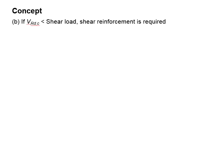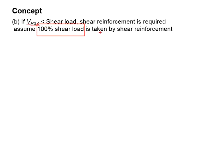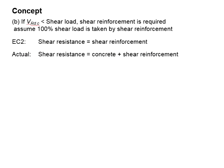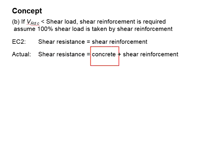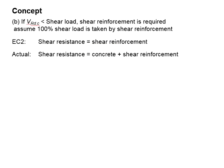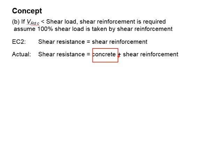Based on the principles of Eurocode, 100% of the shear load shall be taken by the shear reinforcement. In actual situations, the shear resistance of a reinforced concrete section is due to the concrete plus the resistance given by the shear reinforcement. However, when designing using Eurocode, it assumes that the shear resistance is fully taken by the shear reinforcement — Eurocode ignores the contribution of the concrete in terms of shear resistance when shear reinforcement is required.